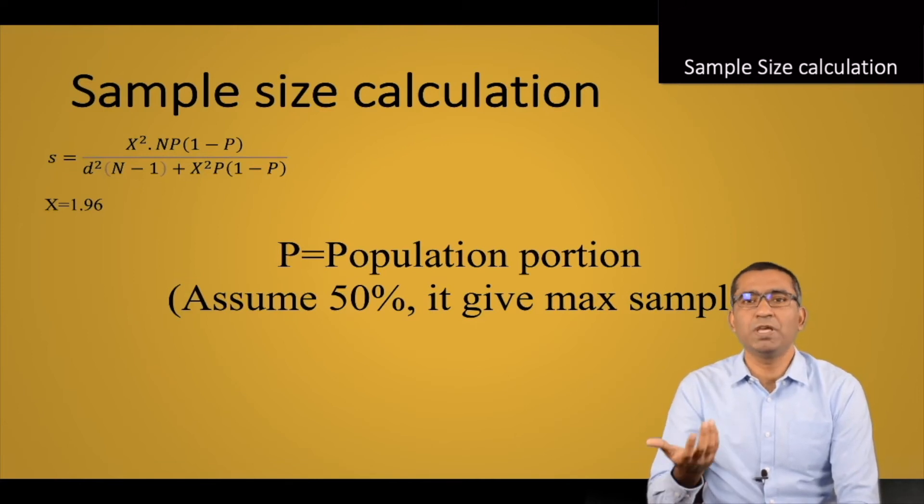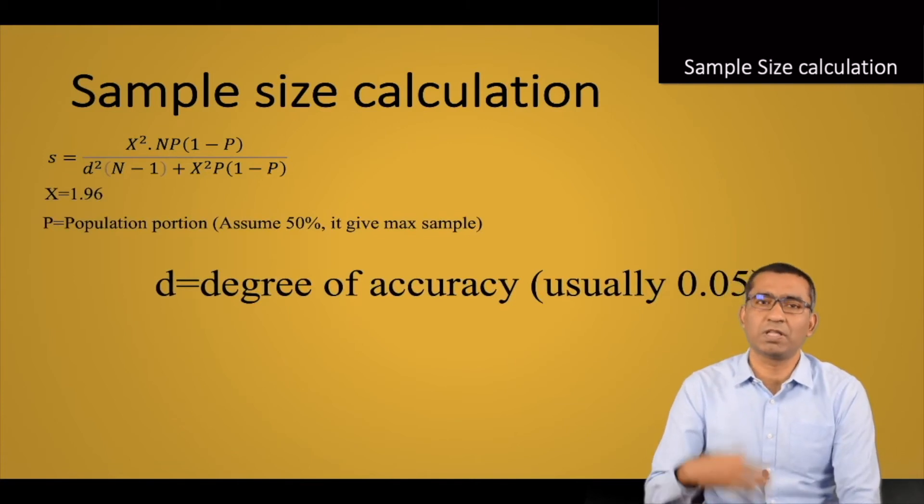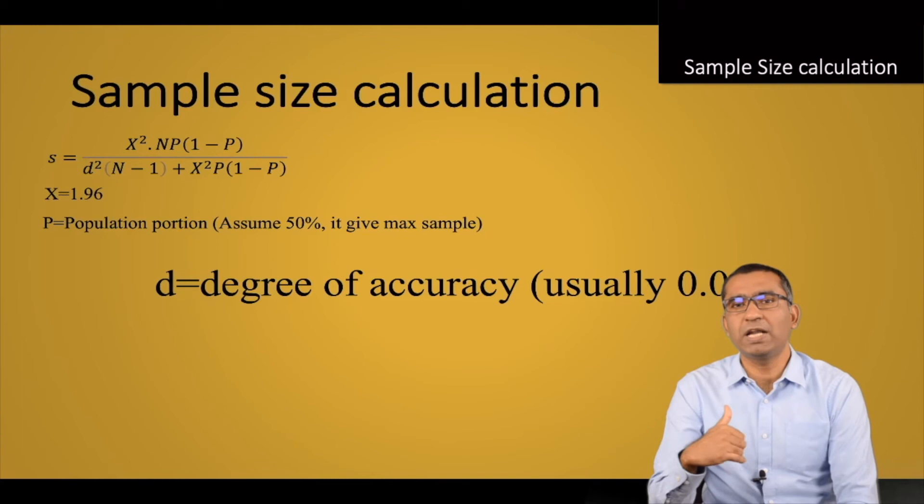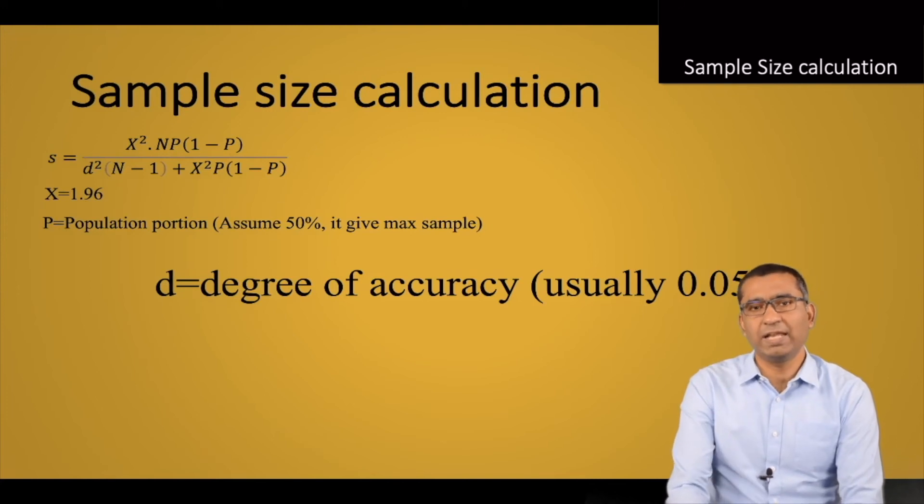So p is 0.05, meaning it is 95% accurate with only 5% chance of error. This is the degree of accuracy. If you are using 1.96, you must use this 0.05. And the next criteria is N, which is your number of population—your estimated population.